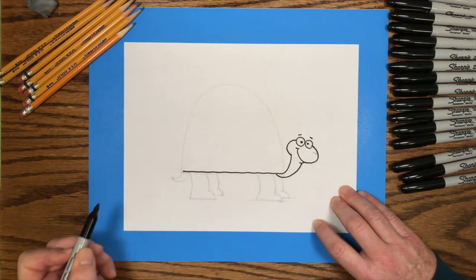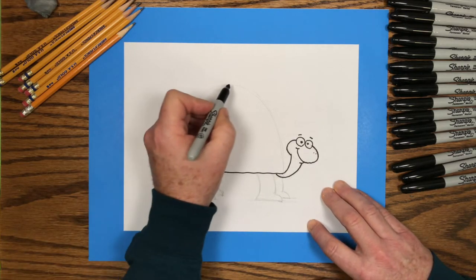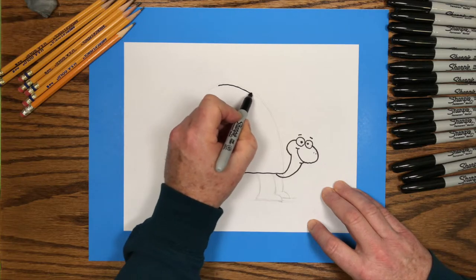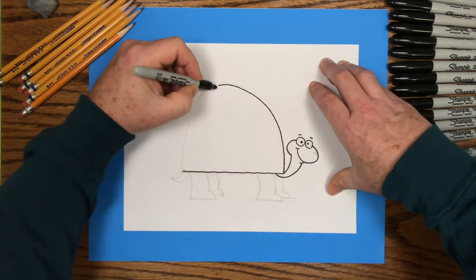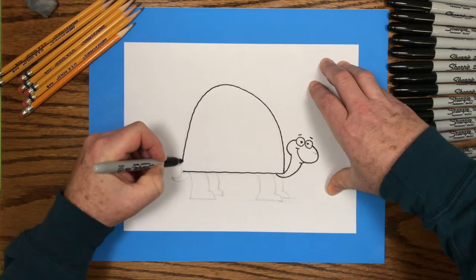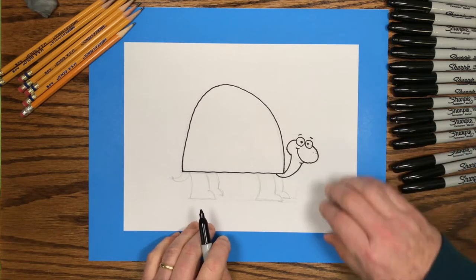Now I trace the shell, which is a straight line across the bottom, and then the big curved line, or the bump, on the top. First one side, and then I come down the back side. And there's the turtle shell.